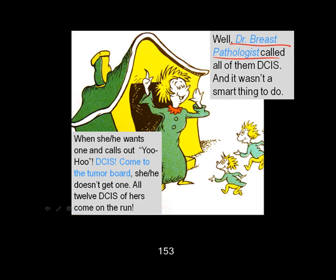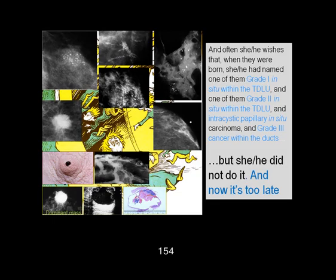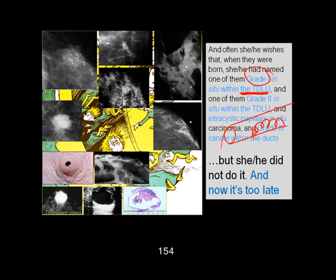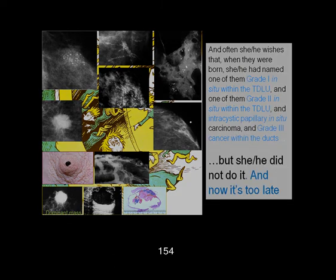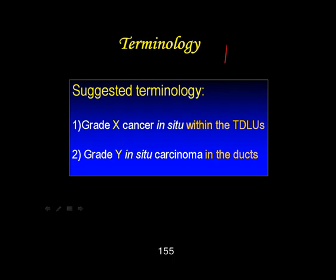Why isn't it okay? Because the time for tumor board is coming. And we say DCIS — come to the tumor board. We don't get one, we get 12 on the run. So here is the suggestion: only pathologists can say this is grade one, and they can say the location. If it's a lobule, don't call it a duct. Grade one within the TDLU, grade two within the TDLU, or intracystic, or grade three within the duct. Team up with good, open-minded pathologists. The suggestion is: drop the DCIS label. Because a very similar picture in the prostate is always called invasive.